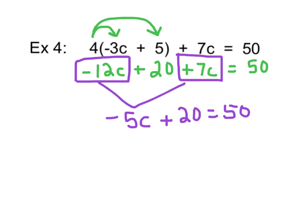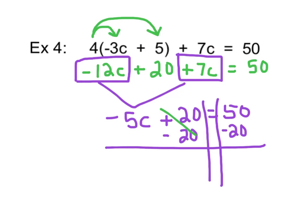Now that we've combined like terms, we're going to solve this equation using our inverse operations. Our first inverse operation is going to be to subtract 20 on both sides. The inverse operations cancel out. What we are left with is negative 5c equals 30. Next, we'll divide both sides by negative 5. Our inverse operations again cancel out. And we are left with c equals negative 6. And we're done.